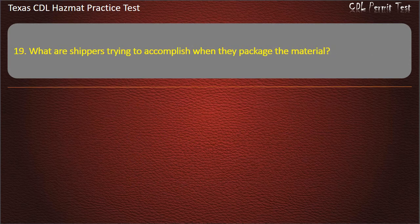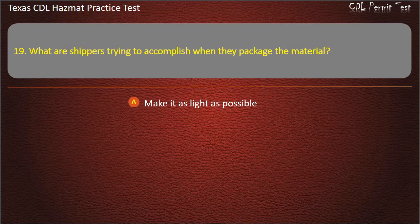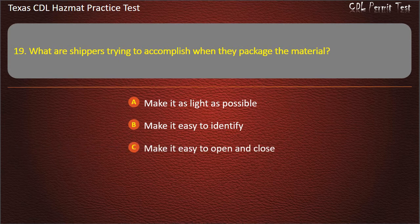Question 19: What are shippers trying to accomplish when they package the material? Make it as light as possible. Make it easy to identify. Make it easy to open and close. All of the above. Answer: Make it easy to identify.